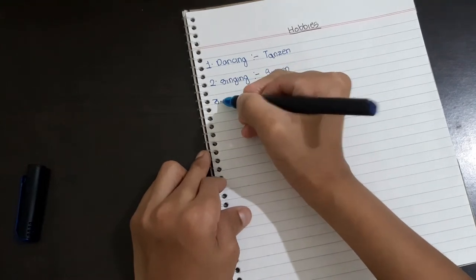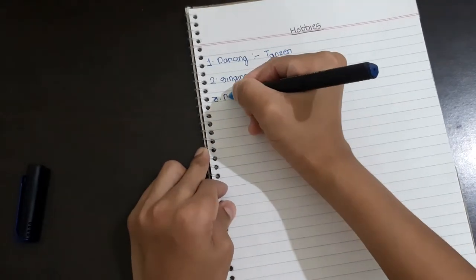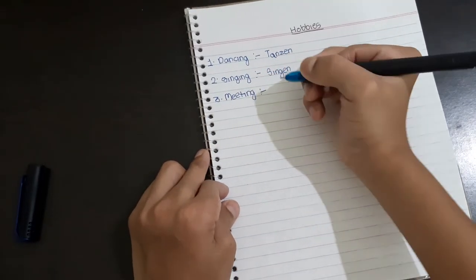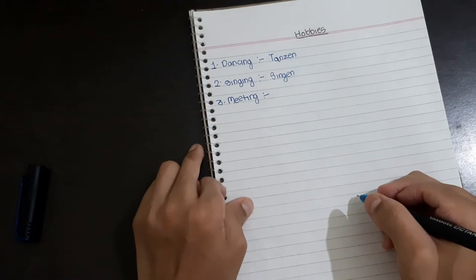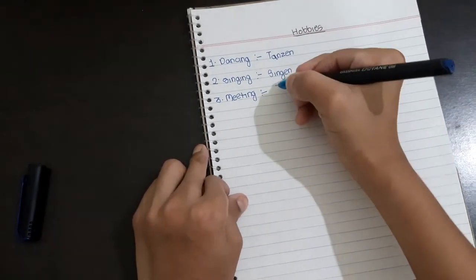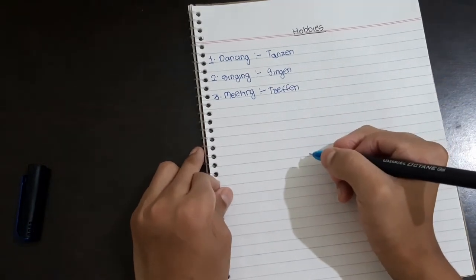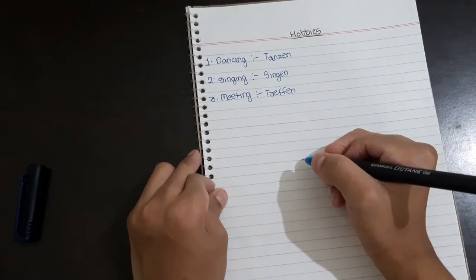So the third one is meeting. Meeting means Treffen. The spelling of Treffen is T-R-E-F-F-E-N.